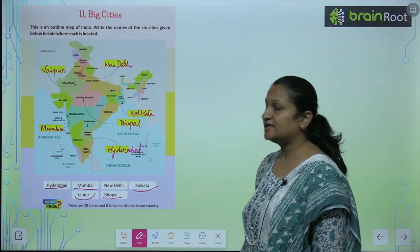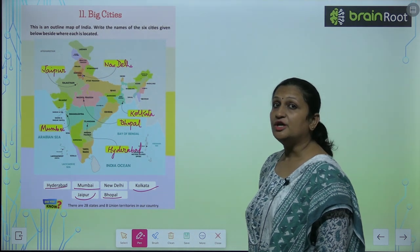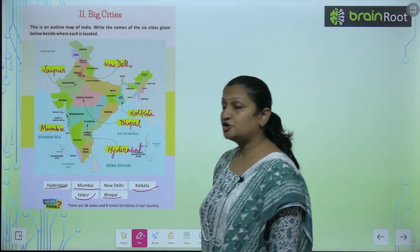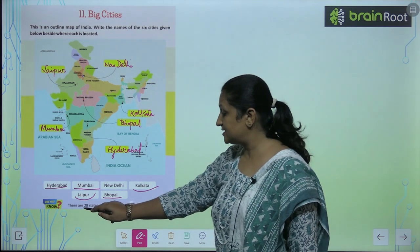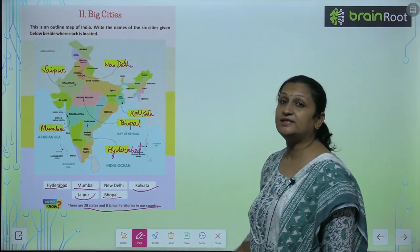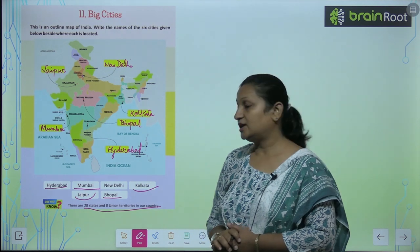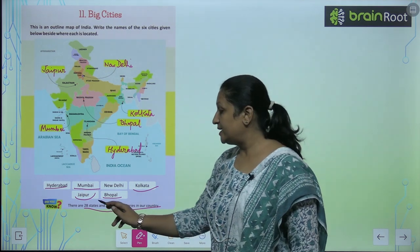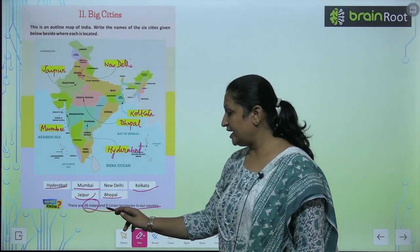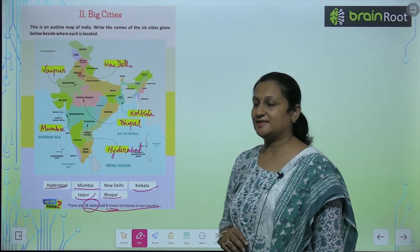Like this you are going to complete this page. Children, did you know — there are 28 states and 8 union territories in our country. So हमारी country में 28 states हैं and 8 union territories present हैं.